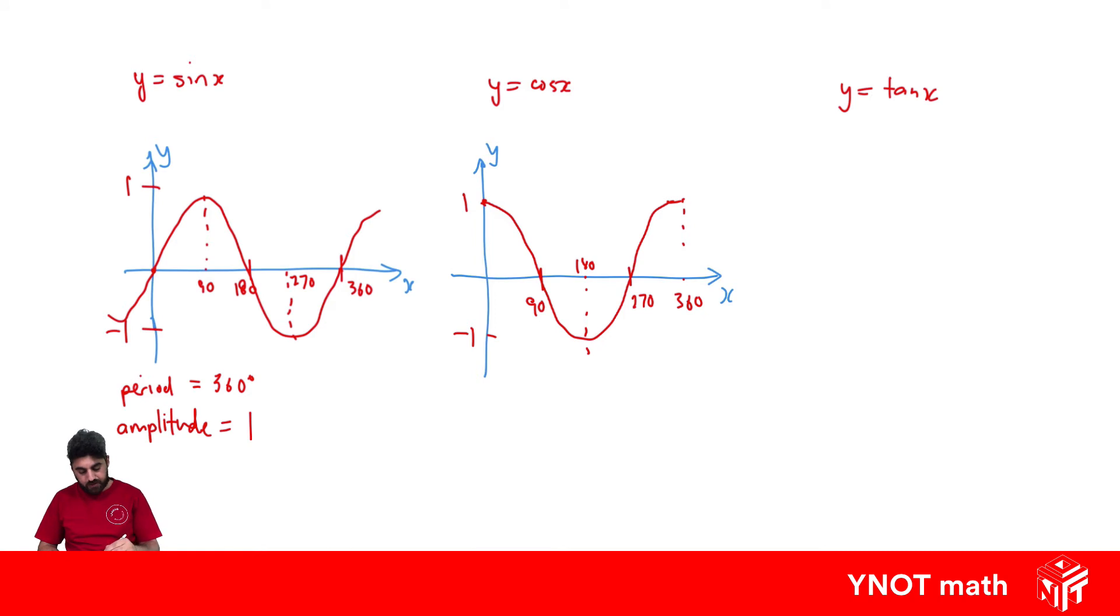Again, this graph goes forever in both directions and repeats itself. The period from 0 to 360, because this is the part that repeats. Exactly the same as sine. Its period is 360 and its amplitude is 1.